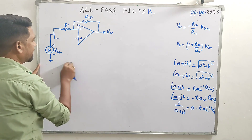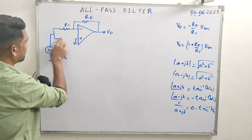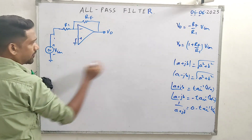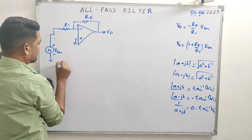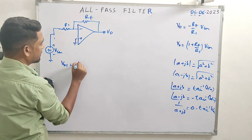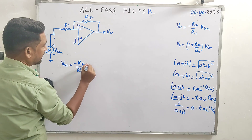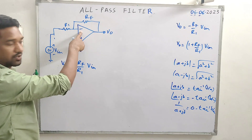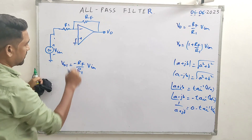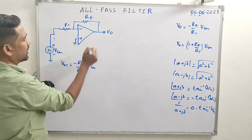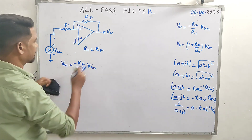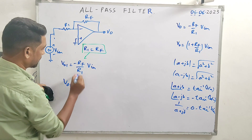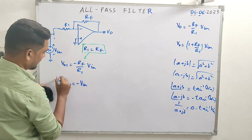For the first case, we ground the non-inverting terminal and apply input to the inverting terminal. So V_naught_1 equals minus RF by R1 into Vin. Assuming the condition that RF equals R1, when we plug in those values, V_naught_1 equals minus Vin.